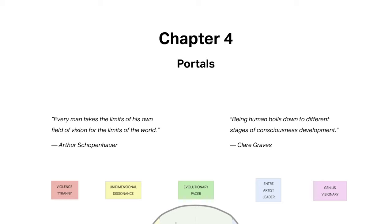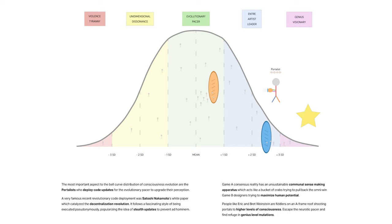Being human boils down to different stages of consciousness development. Claire Graves. The most important aspect to the bell curve distribution of consciousness evolution are the portalists who deploy code updates for the evolutionary pacer to upgrade their perception.